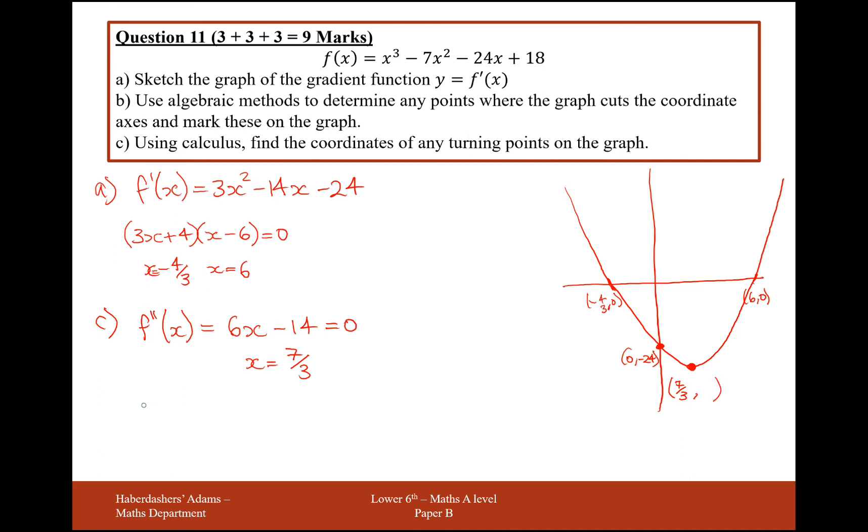So the coordinate is going to be 7 over 3. And then to find the y coordinate of this here, we need to plug 7 over 3 back into the differential function. So it's going to be 3 times 7 over 3 squared, minus 14 times 7 over 3 minus 24. And we get, let's grab a calculator, minus 121 over 3. Minus 121 over 3 is my coordinate there.